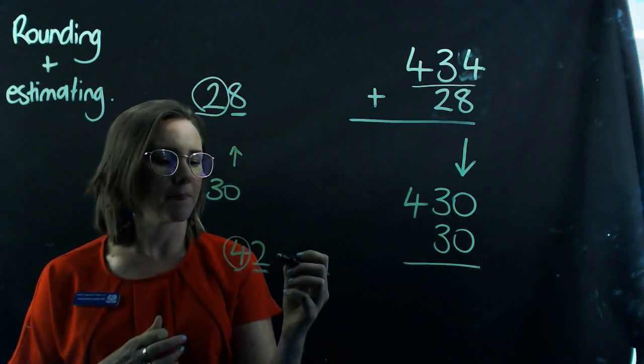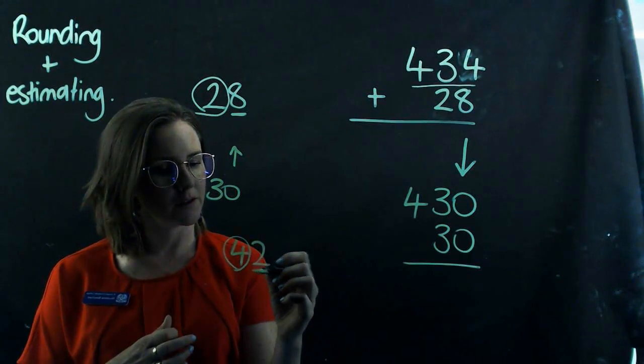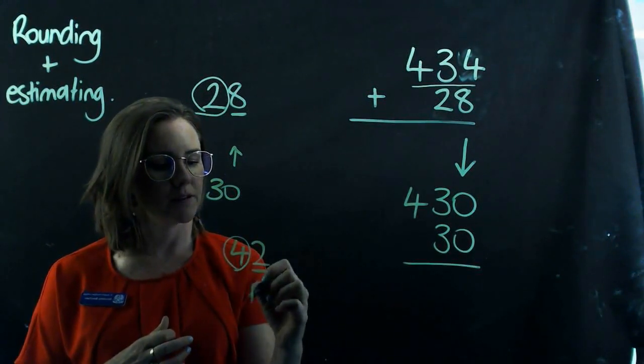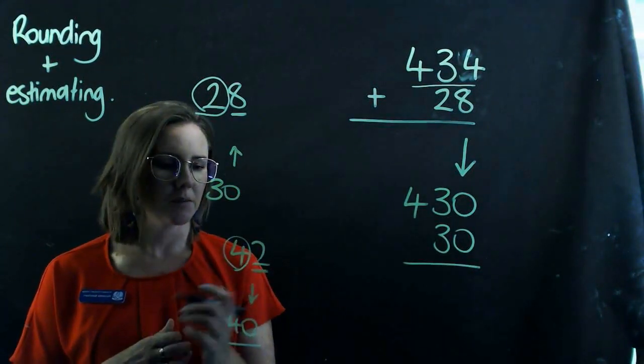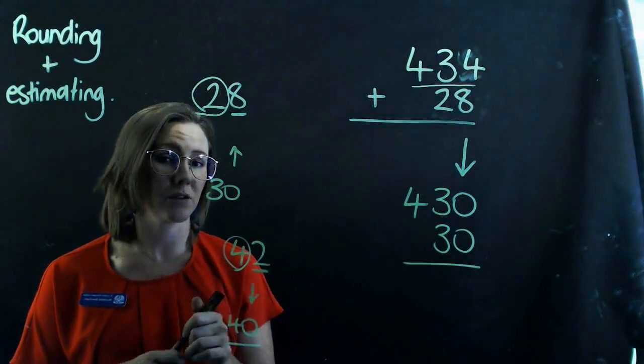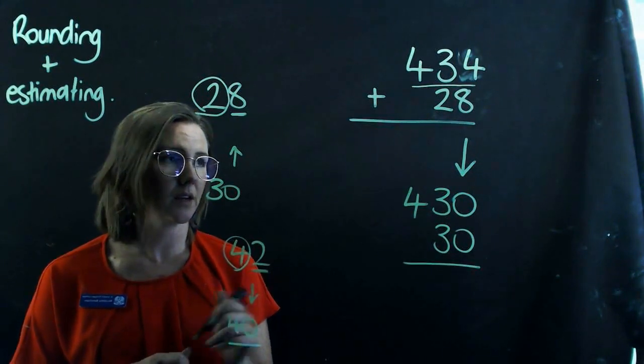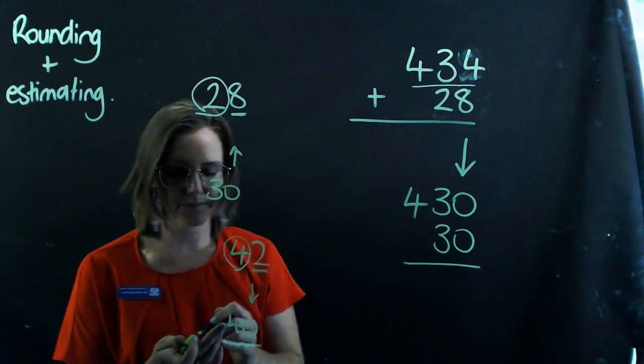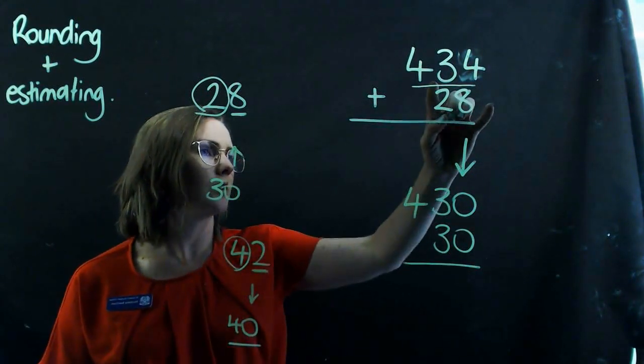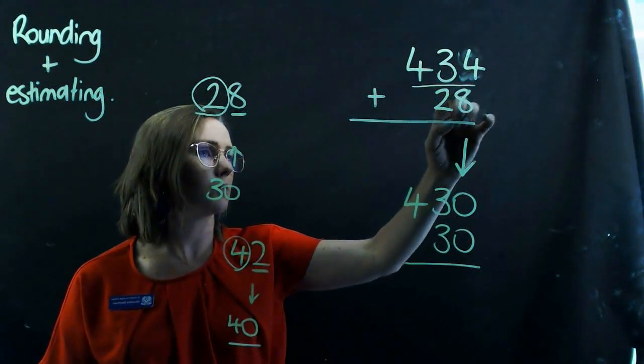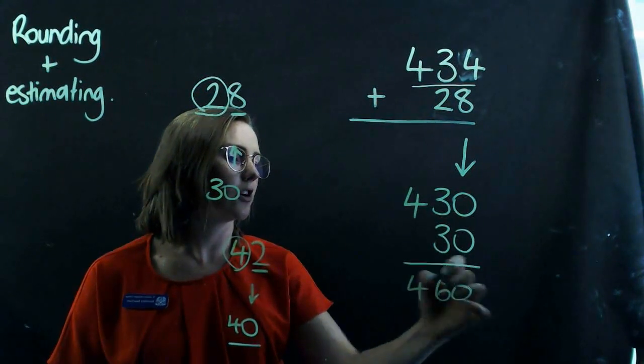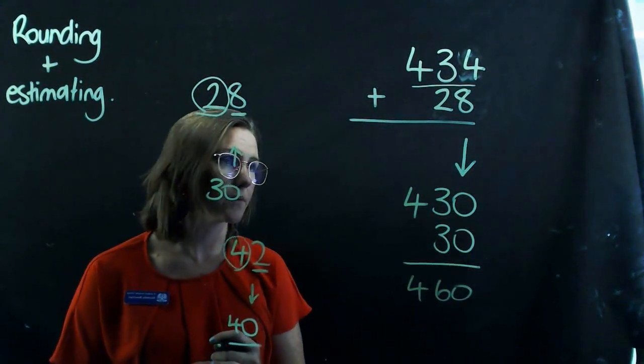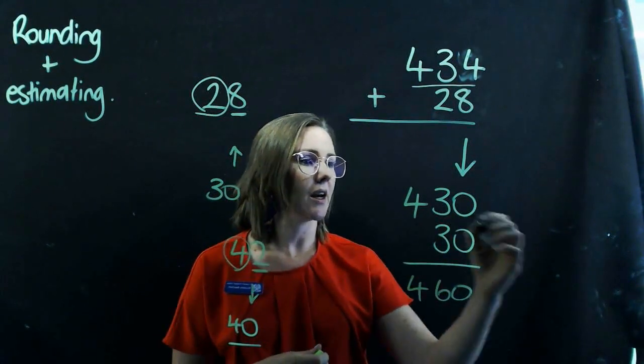So because it is below five, that being two, then I round it down to 40. I don't round it down to 30 because that's not the nearest 10. 40 is my nearest 10. So back to my question. Here I've got 434 plus 28. I've rounded it here. So quickly in my head, I know that my answer should be close to 460. Let's work that out.